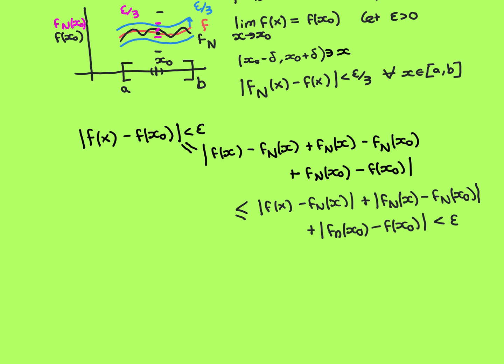So let's continue on. I've just argued how this thing is equal to this far more complicated looking thing. What I can now do is use the triangle inequality on this twice to say that this, which is equal to this, is less than or equal to the modulus of f of x minus f_n of x, plus the modulus of f_n at x minus f_n at x0, plus the modulus of f_n at x0 minus f at x0.